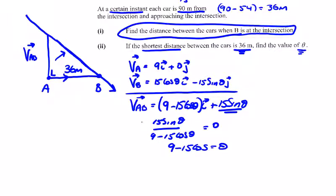That's it. 9 minus 15 cos theta equals 0, so cos theta is going to be equal to 9 over 15, giving theta a value of 53.13 degrees.